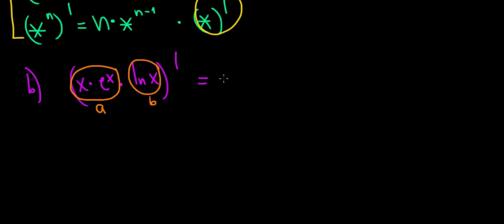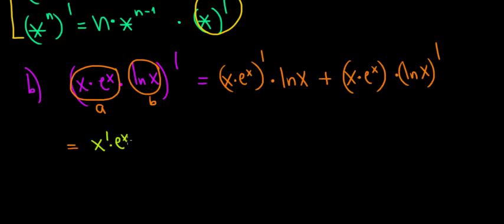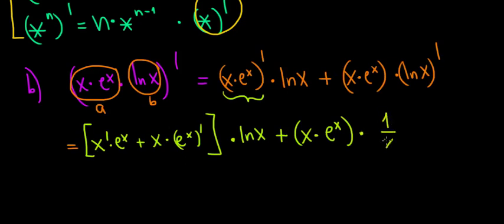We apply the product rule: the derivative of the first term (x times e to the power of x) multiplied by the second term (ln of x), plus the first term regular times the derivative of the second term (ln of x derivative, which is 1 over x). Now we apply the basic product rule to x times e to the power of x: that's x derivative times e to the power of x, plus x times e to the power of x derivative.